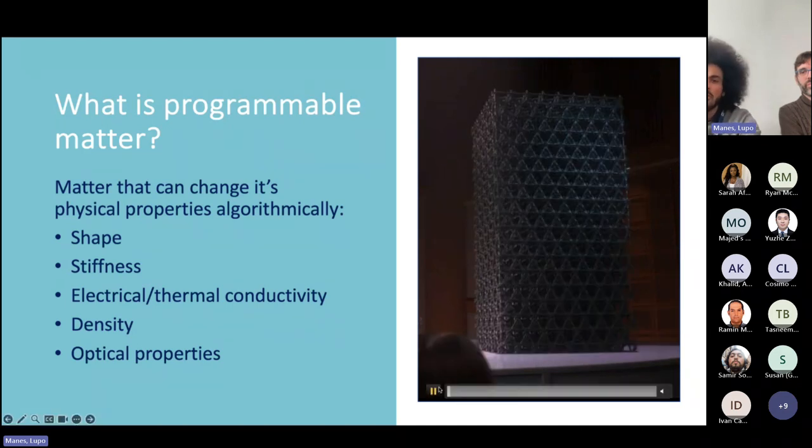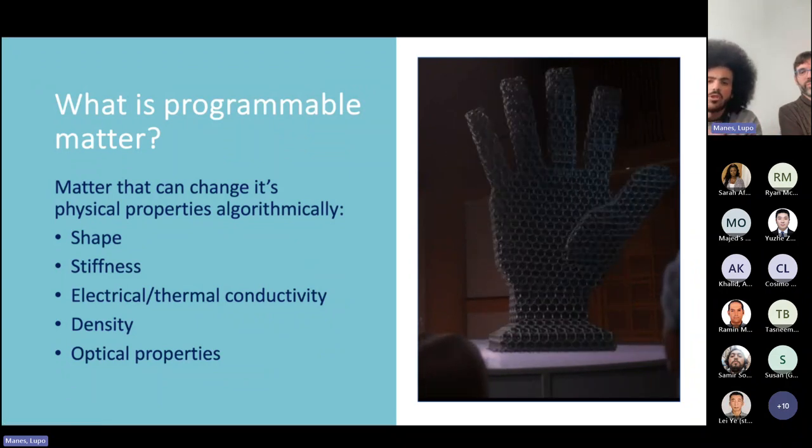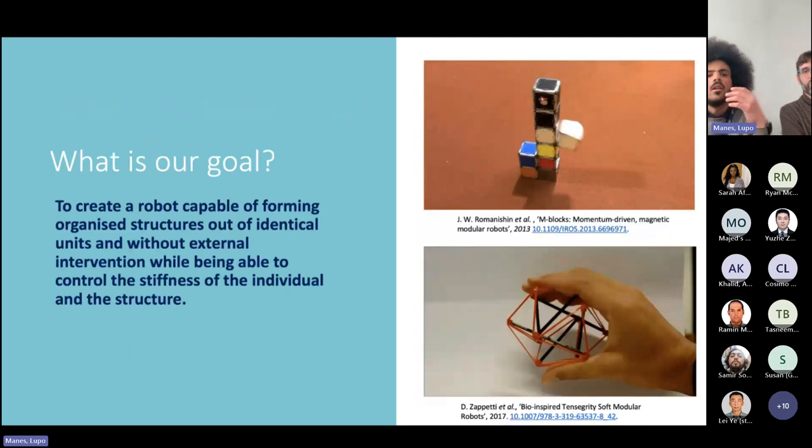They can reconfigure in shape, they can move, and it fits with the definition of programmable matter. We can reconfigure shape, stiffness, electrical and thermal conductivity, density, or optical properties. And specifically with IMPRESS, we wanted to focus on the shape and the stiffness.